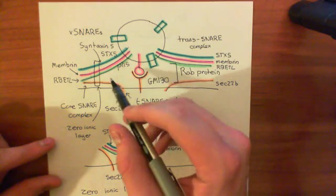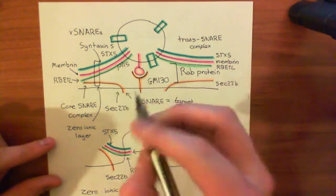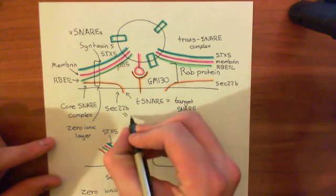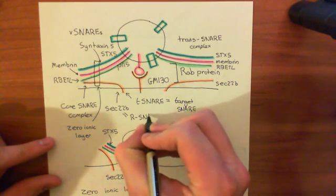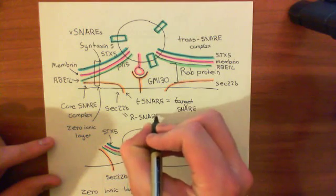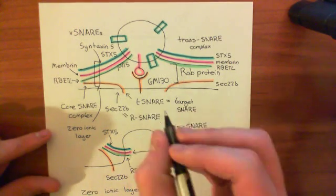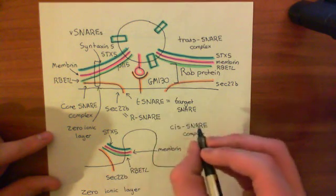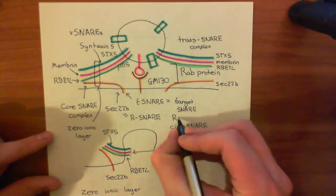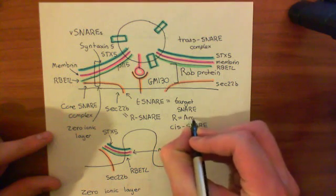And this is the reason that one of them is then called an R-SNARE and in this case it's SEC-22B, so this is an R-SNARE and the reason is that it's the one that's contributing the arginine to the zero-ionic layer and R is the single letter code for arginine.